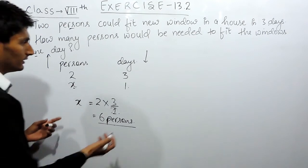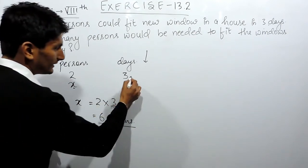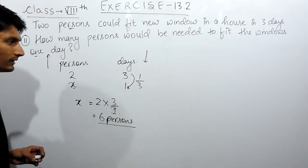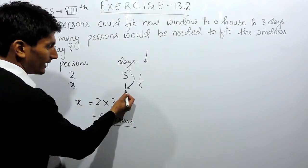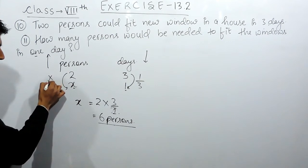Now there can be another method. Again we know that this is an inverse proportion and this number of days is getting one third. This has become now one third. So obviously this must increase three times.